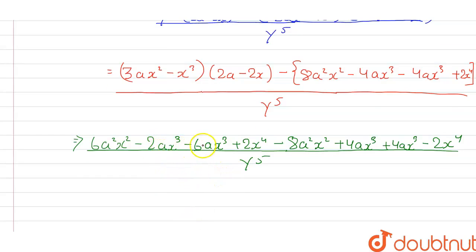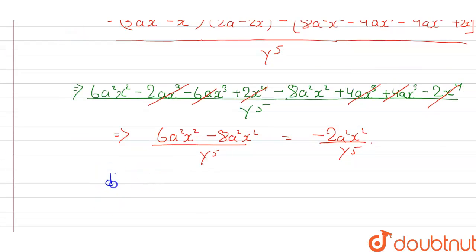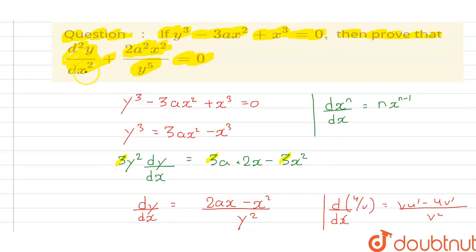Now cancelling terms: minus 2ax³ minus 6ax³ gives minus 8ax³, and plus 4ax³ plus 4ax³ gives plus 8ax³ — these cancel each other. The plus 2x⁴ and minus 2x⁴ also cancel. The remaining value is 6a²x² minus 8a²x², which equals minus 2a²x², all divided by y to the power 5. So d²y/dx² equals minus 2a²x² divided by y⁵.